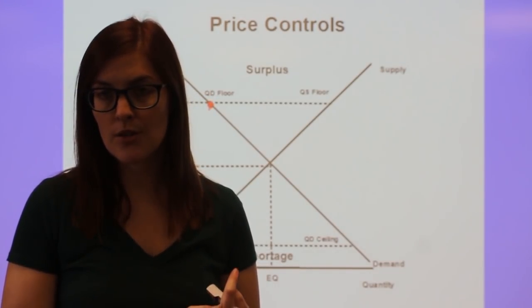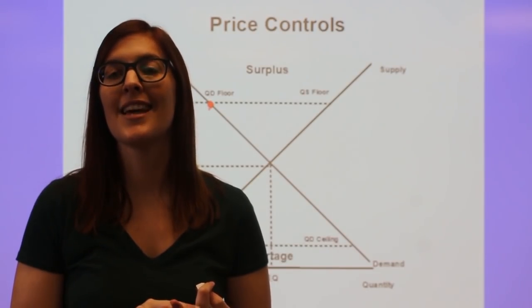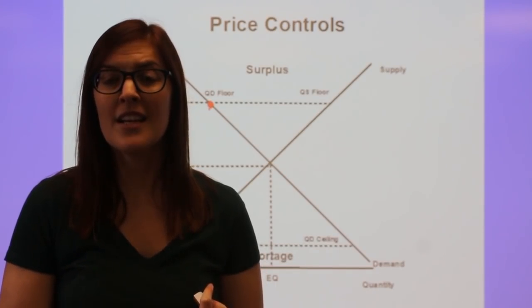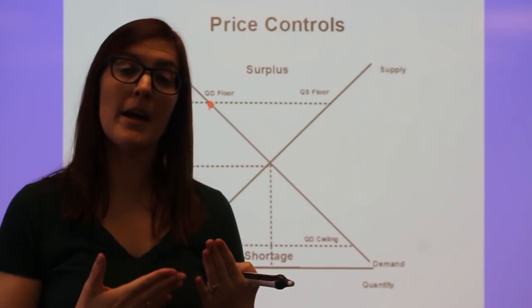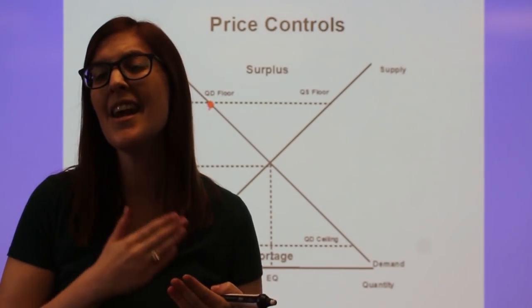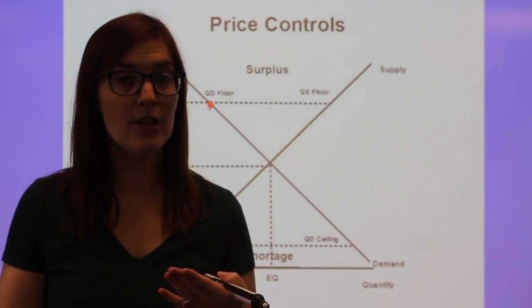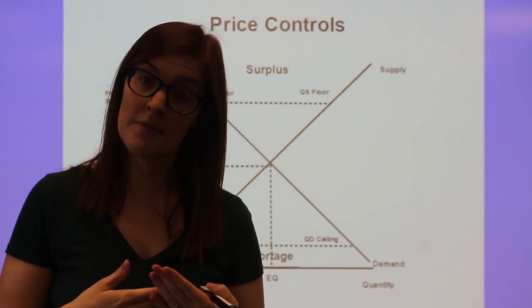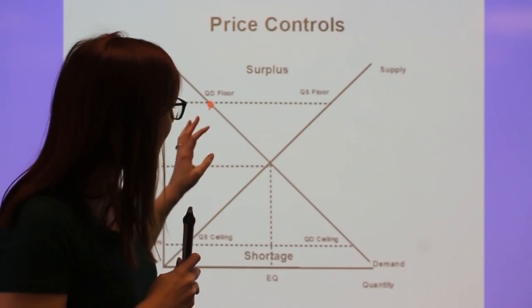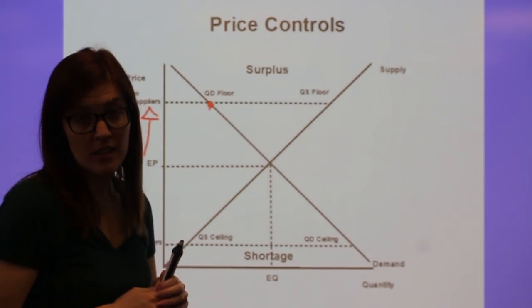And diminishing marginal utility. This is decreasing satisfaction with each additional unit. This is that idea of I'm only willing to buy a large quantity of something if the price is low. Because I know I'm never going to be as satisfied with the fifth, the sixth, the seventh of a good as I was with the first. So that is describing that movement along the line.